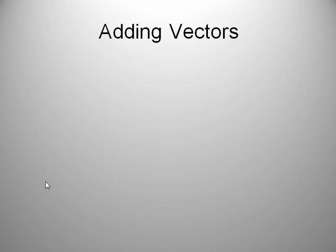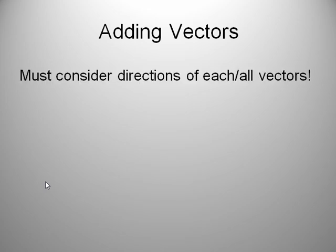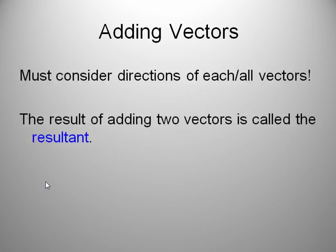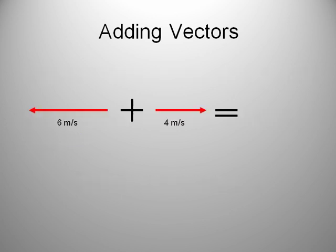Adding vectors. How do we add them? So we have to consider the direction of every vector present. So let's take two vectors. The little vocabulary here, when we add two vectors, the result is called the resultant vector. So here we have a vector of 6 meters per second. Here we have one of 4 meters per second. If we're going to add these two, we're going to get 2 meters per second. That should be resultant speed. So 6 this way to the left and 4 to the right yields 2 to the left.